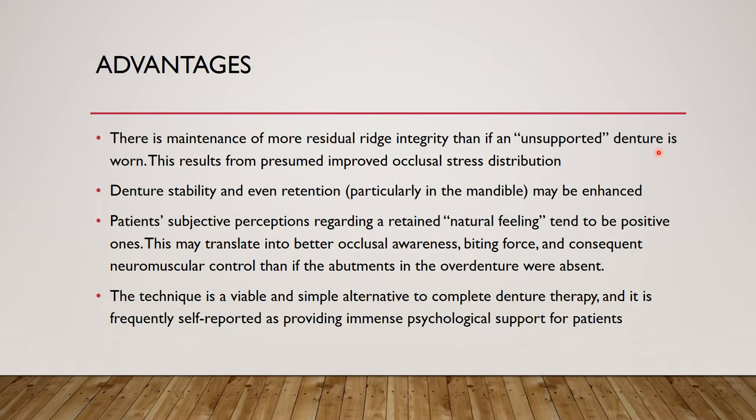The second advantage is denture stability and retention, particularly in the mandible. Overdentures are most commonly done in the mandible because the mandibular arch resorbs faster than the maxilla. If teeth remain in the mandibular arch — specifically canines and premolars as preferred abutments — they provide stability and retention to the denture.